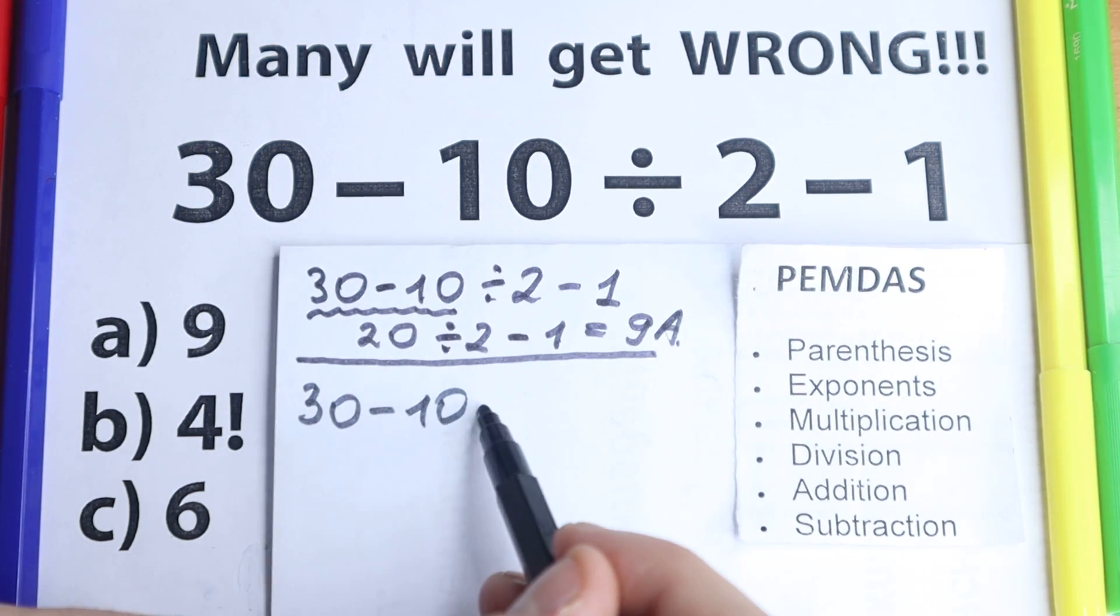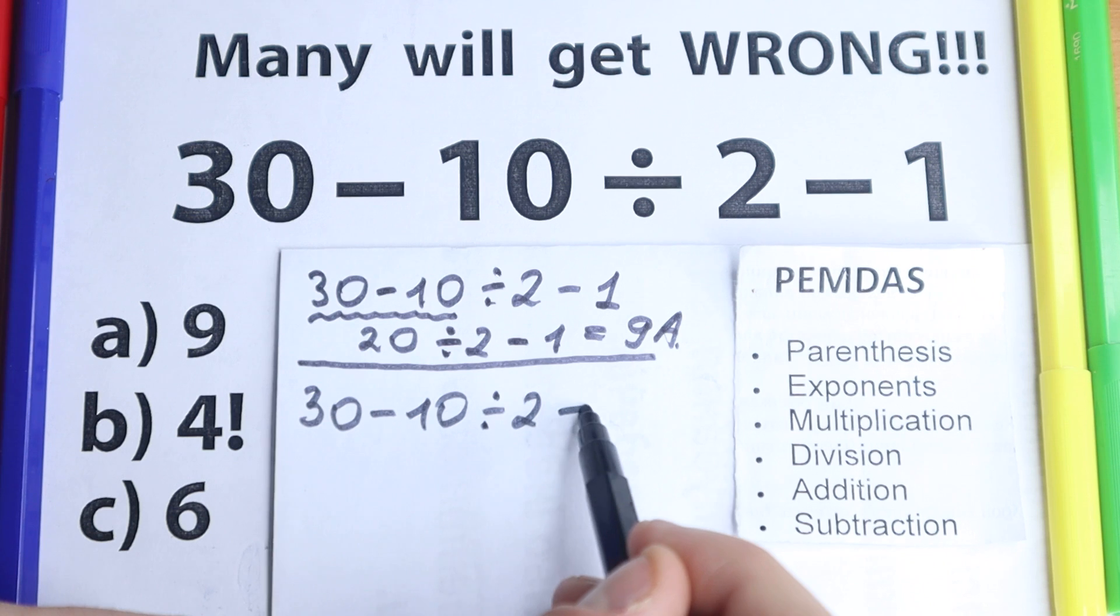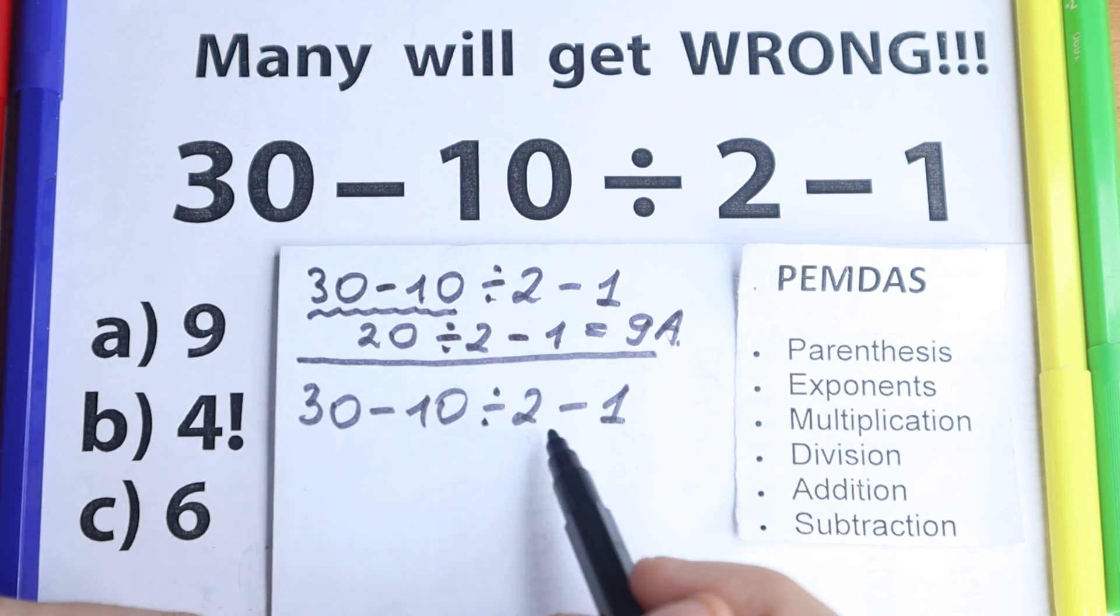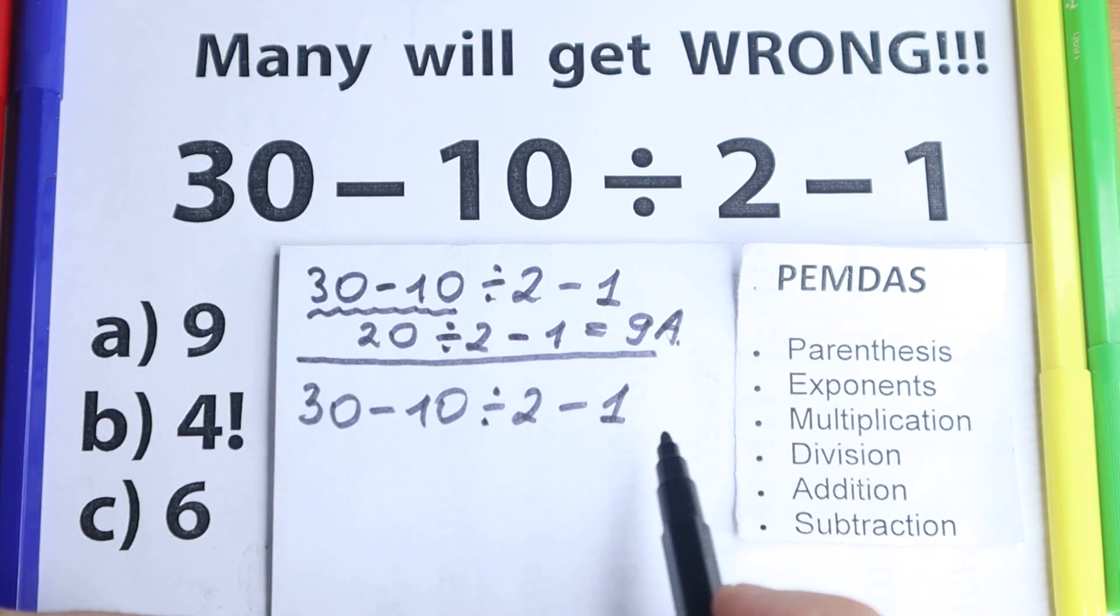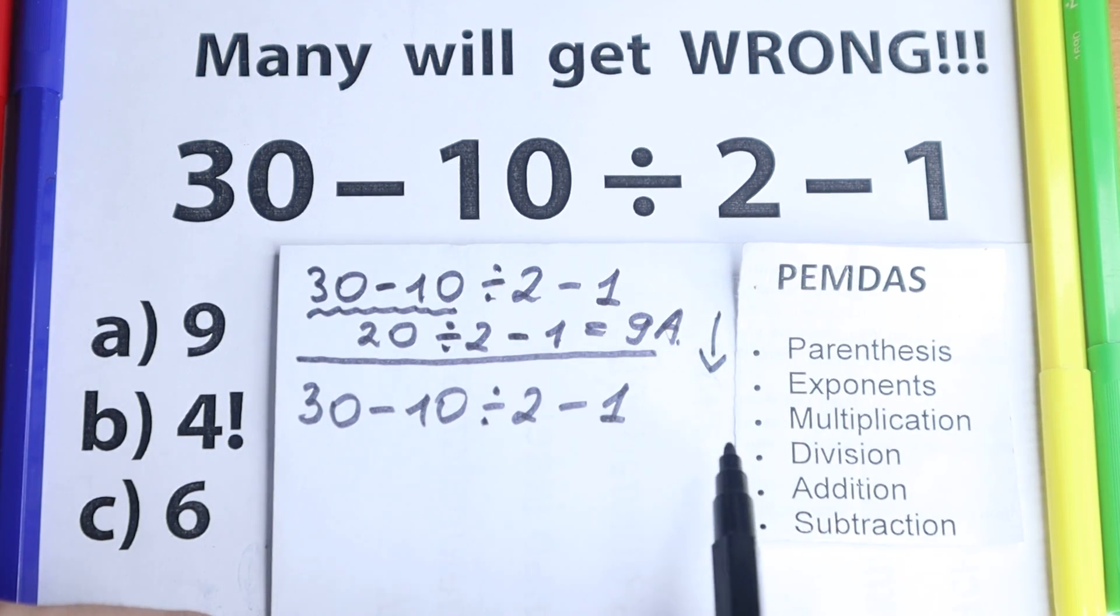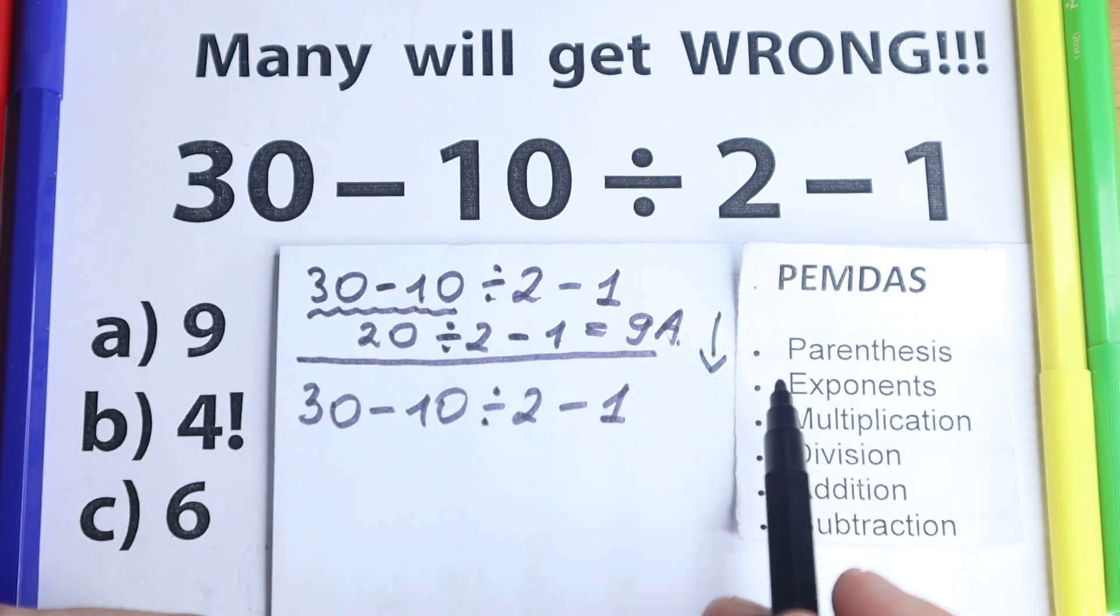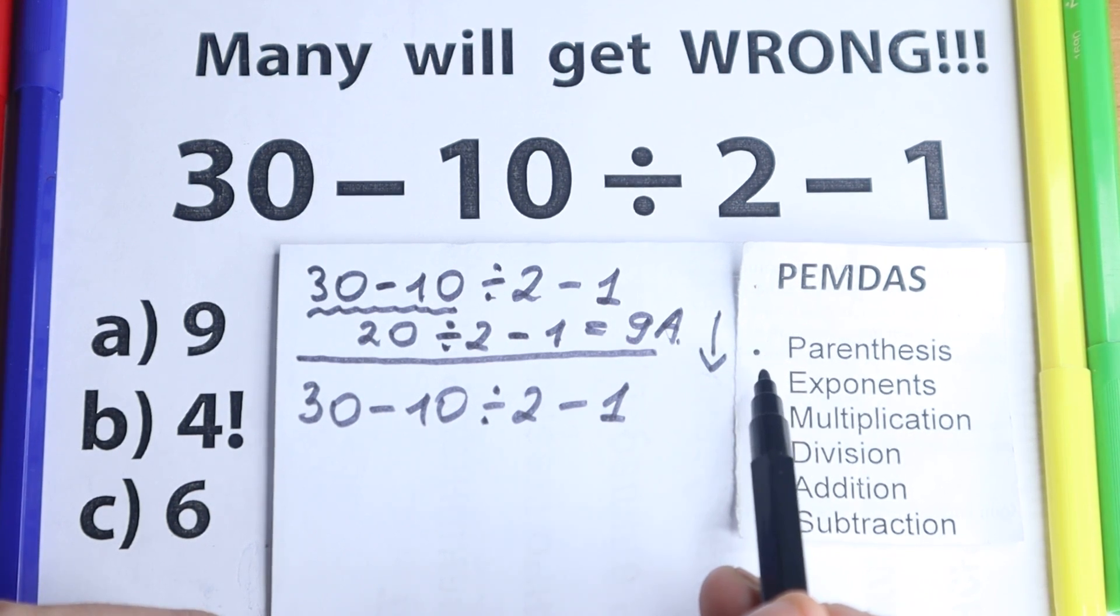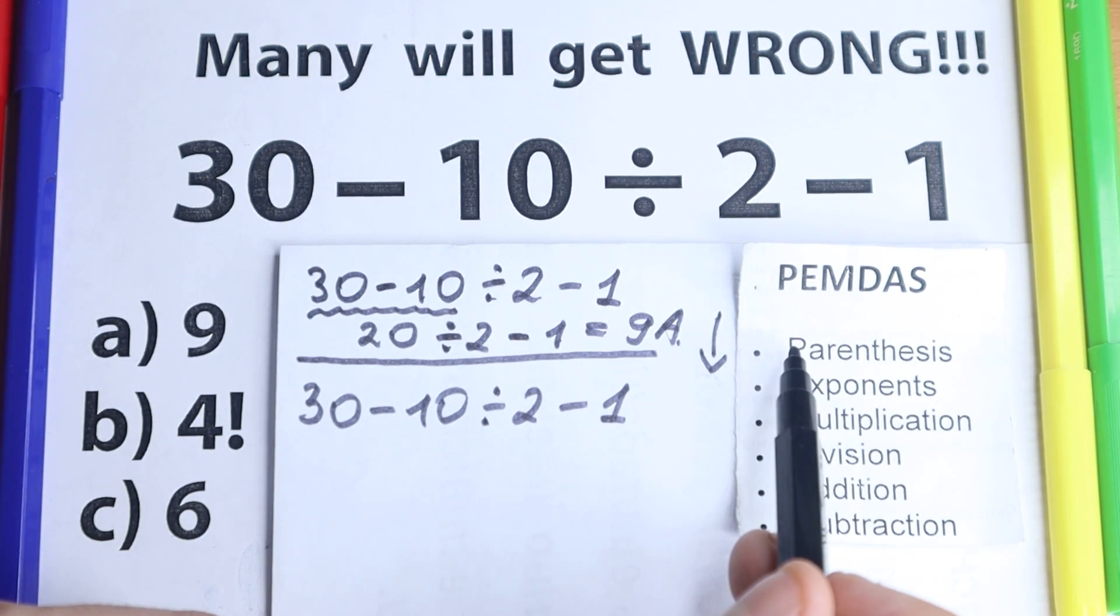We have 30 minus 10 divided by 2 and minus 1. Let's check this solution according to this answer according to PEMDAS, okay? This PEMDAS works from the top to the bottom right here. What is the first step?